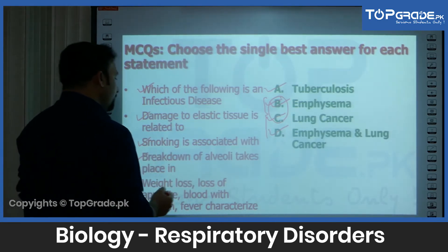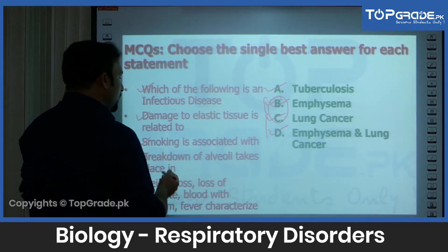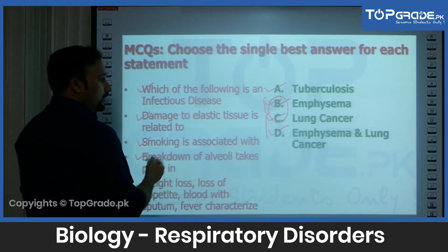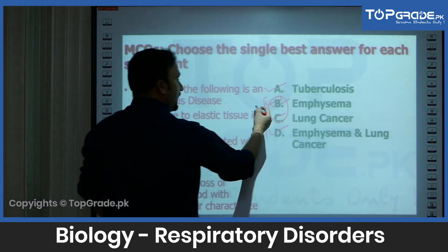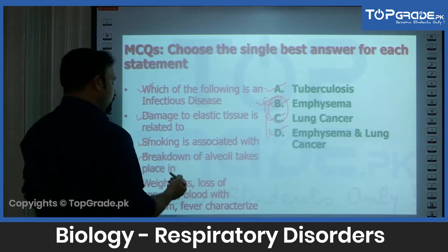A breakdown of alveoli takes place in which disease? Alveoli breakdown basically occurs in emphysema. So the best response would be B — emphysema.